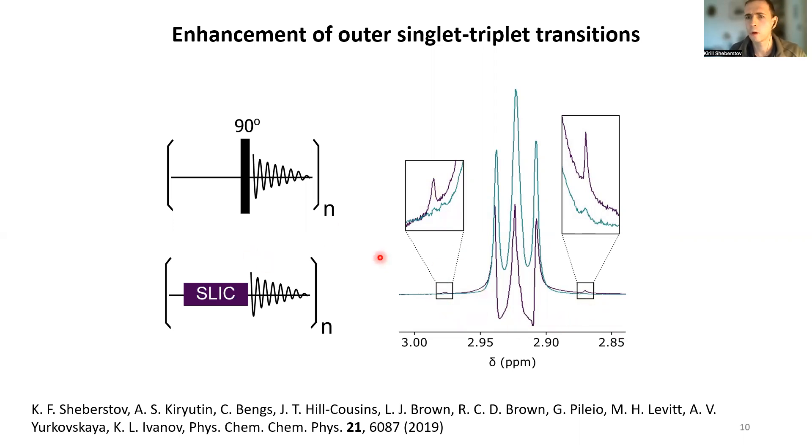They have very characteristic splitting of around 27 hertz and they are reproduced for all different molecules we studied. So this is a kind of, maximum 10 minutes experiment to quickly check: do you expect to see long-lived states in this particular CH2 group or not?